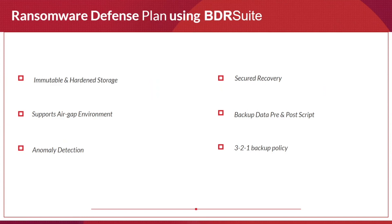The remaining three planned ransomware defense features coming in future releases are: immutable and hardened storage, anomaly detection, and secured recovery. Immutable storage is a highly requested feature from customers and partners globally. It is being planned for both cloud and on-premises Linux immutable storage, along with a hardened storage variant. With immutable backup, data can be written once but read multiple times — this is the WORM model.